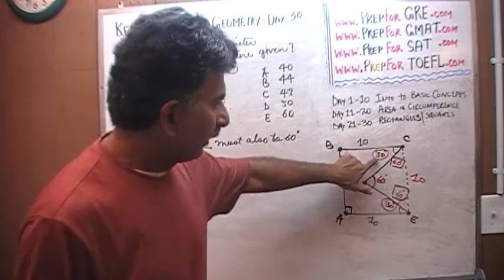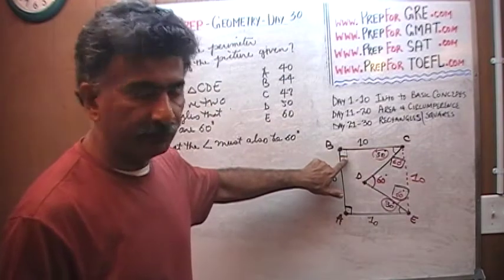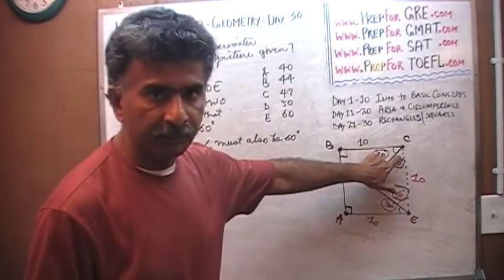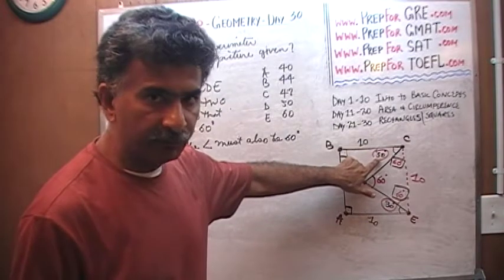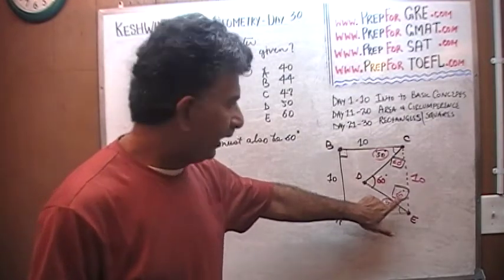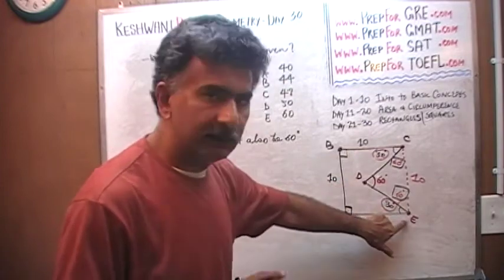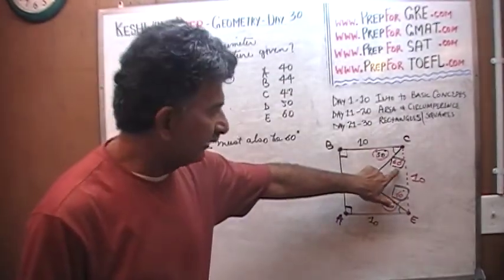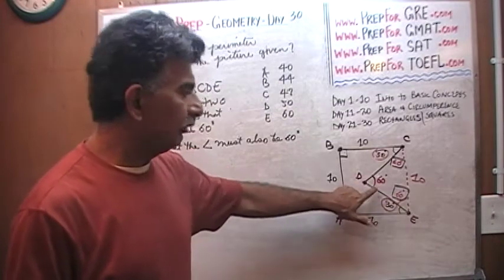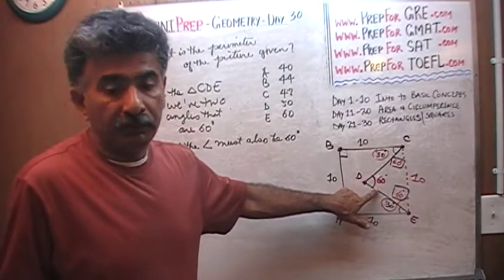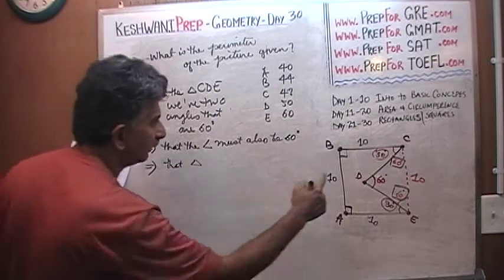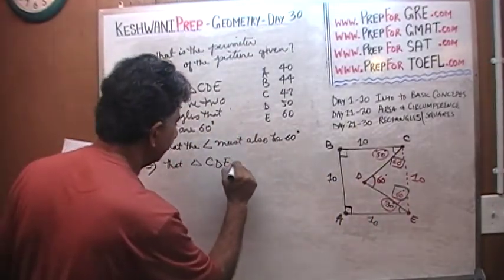Based on that, we know since we are told that this is 30 degrees, this must be 60. The same exact logic applies here. We are told that this is 30 degrees, therefore this must be 60. Now, if you look at the triangle CDE, we just arrived at the conclusion that this angle is 60 and this angle is 60. Well, if two angles of a triangle are 60 degrees, then the third one must also be 60, because they have to add up to 180. Therefore, it turns out, it implies that triangle CDE is, in fact, an equilateral triangle.